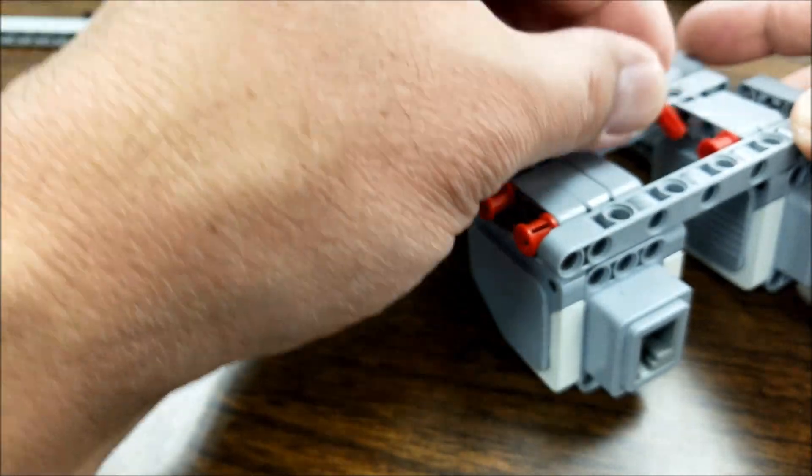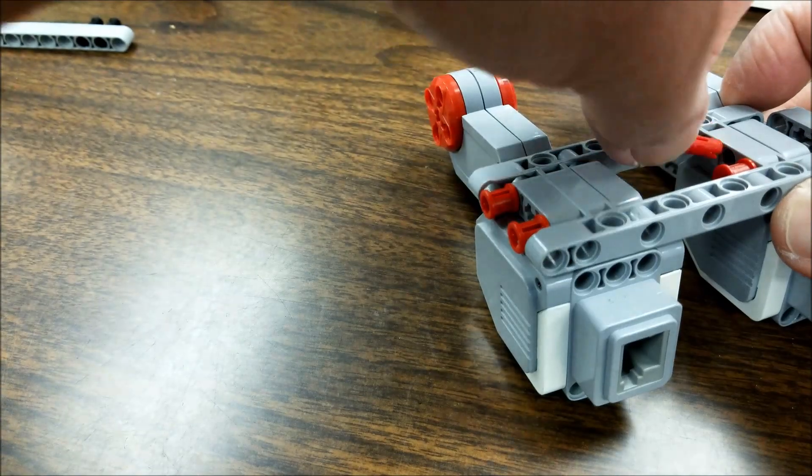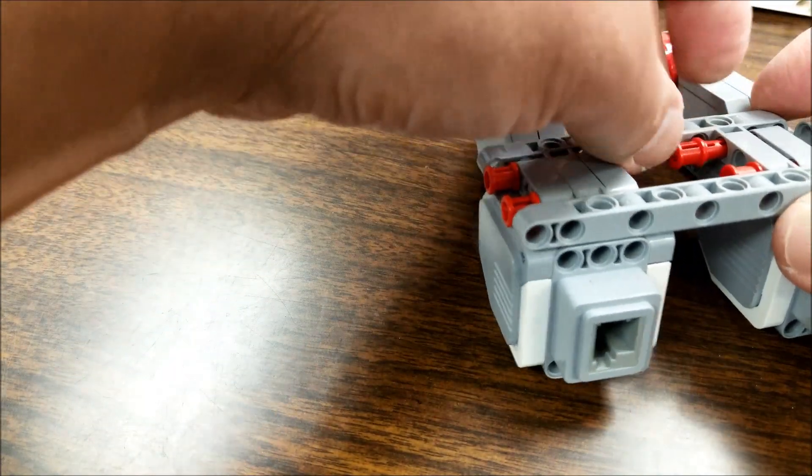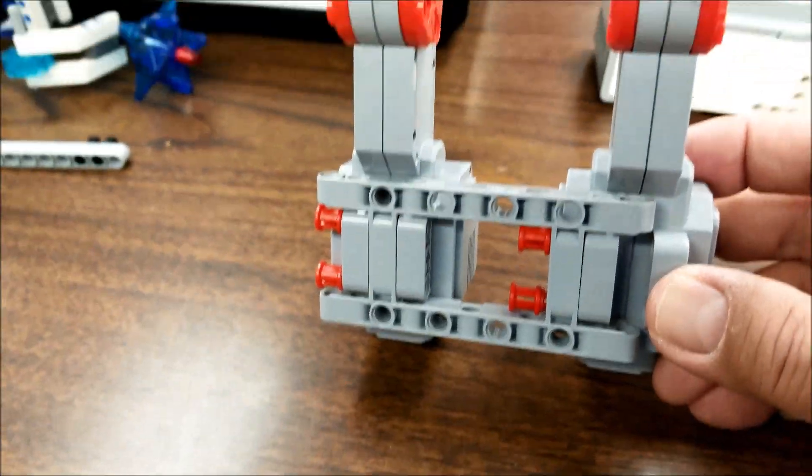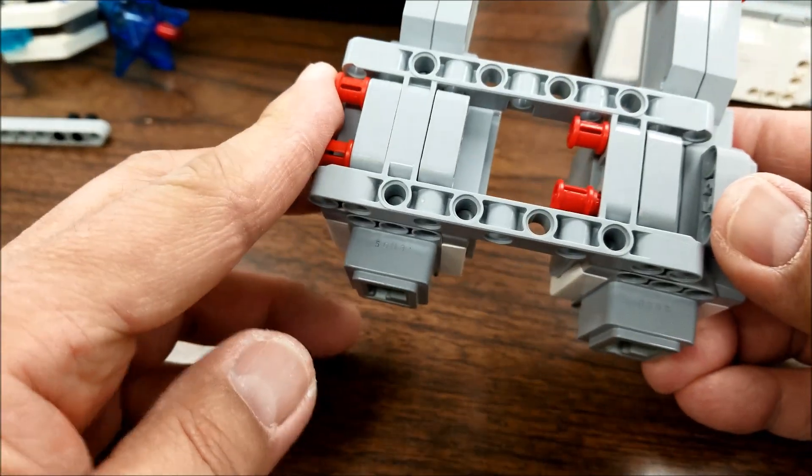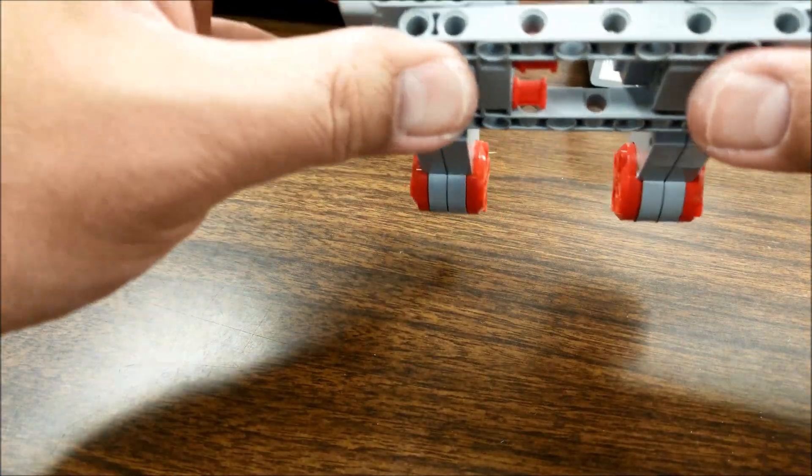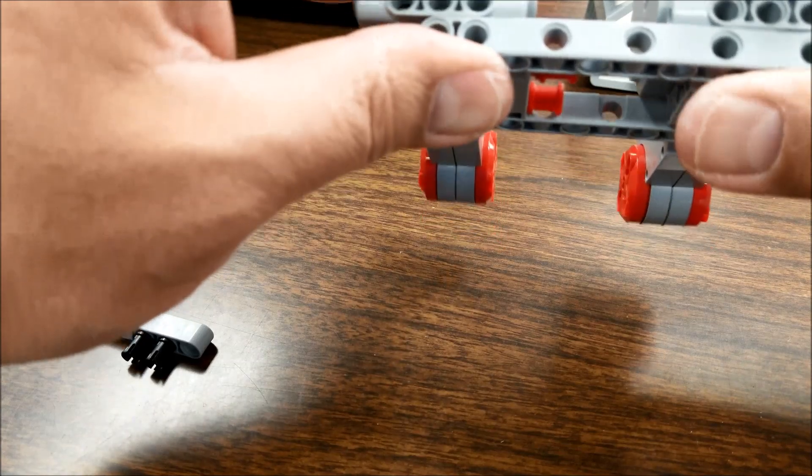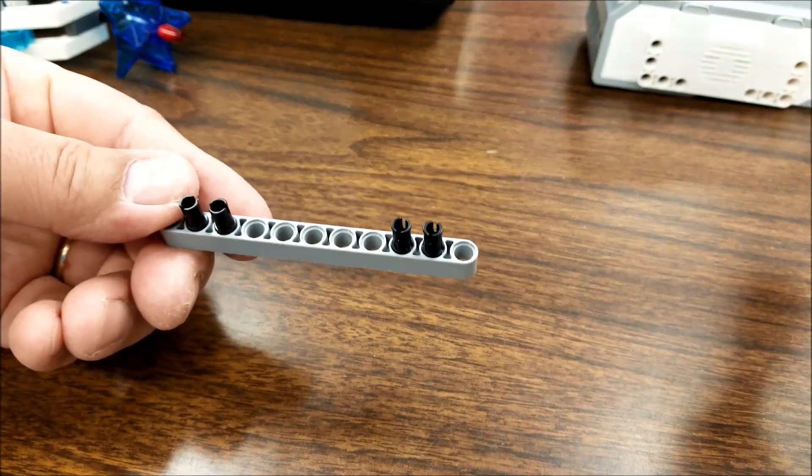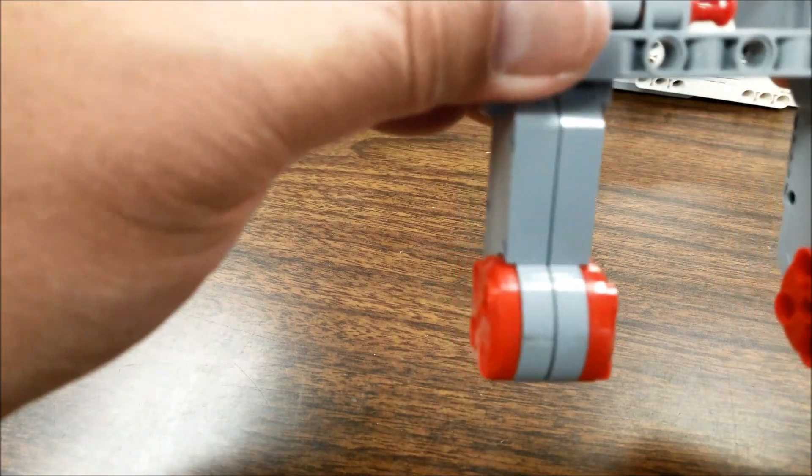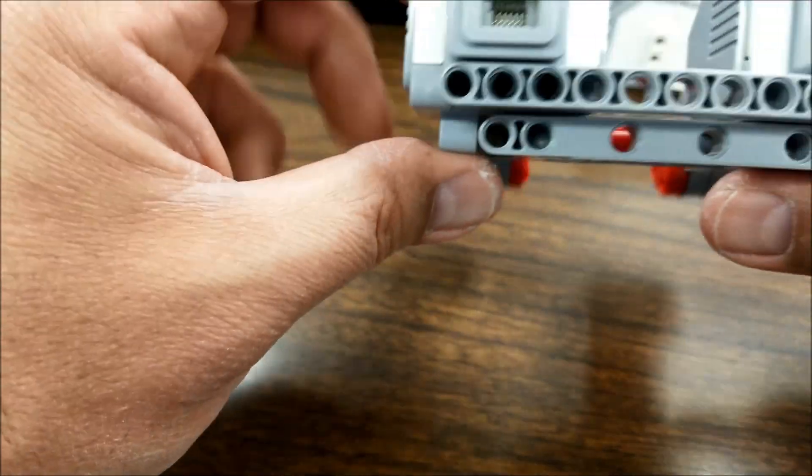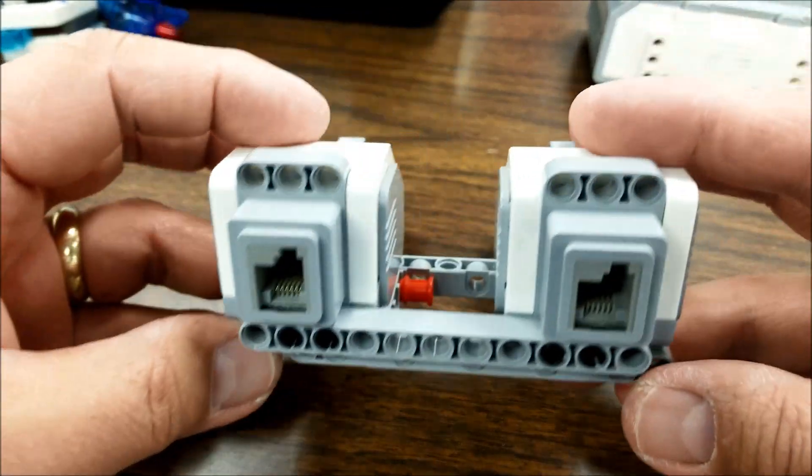So we're going to want it like that. Now here's what we'll do. I have an 11 beam and I have my black connectors put in. And I'm just going to put them in like that, just to give this guy a little bit more stability.